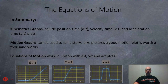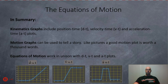In summary, kinematic graphs include position-time plots, velocity-time plots, and acceleration-time plots. Motion graphs can be used to tell a story — like pictures, a good motion plot is worth a thousand words. The equations of motion work in unison with the different plots we use for describing motion. I hope this helps; I know this is one of the more challenging aspects of kinematics. Good luck, and if you have any questions, please see me.